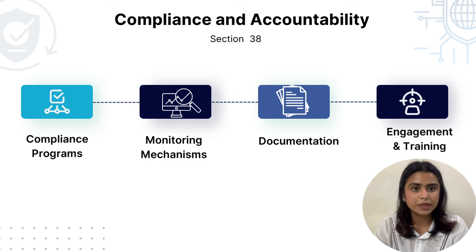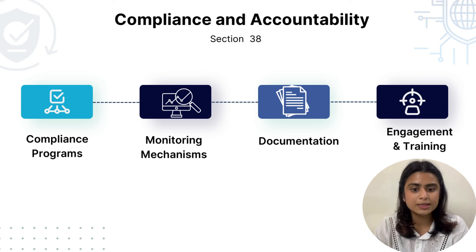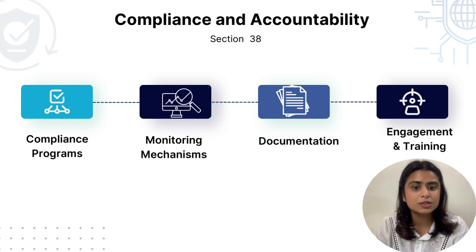Third, documentation. We need to maintain transparent and detailed records of all compliance efforts. For example, Oracle maintains comprehensive records of all compliance activities, including audits and corrective actions, to demonstrate adherence to regulatory requirements. Having transparent documentation demonstrates the organization's commitment to compliance and supports regulatory requirements.